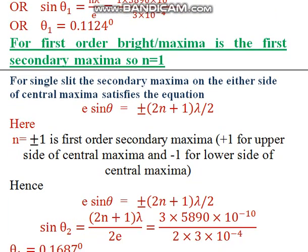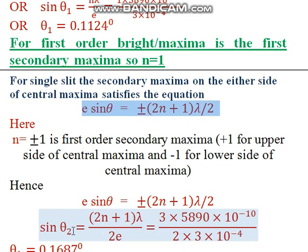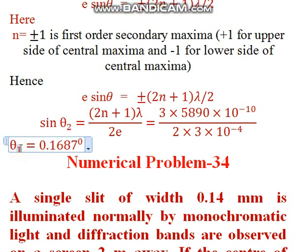Now for the first order bright band, also known as the first secondary maxima: all secondary maxima satisfy the equation e·sinθ = ±(2n+1)·λ/2. For the first secondary maxima, we put n = 1 and calculate the angle θ₂. This gives θ₂ = 0.1687 degrees. So these are our two answers for problem 33.